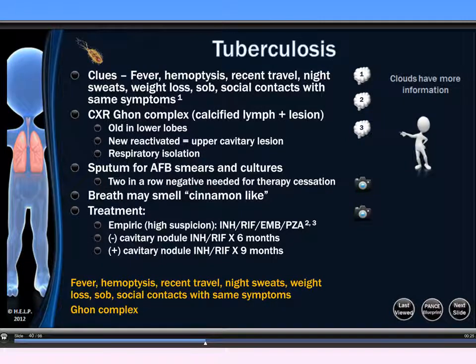We are now in the tuberculosis section of the Help PANCE-PANRE review. We are on one page where we can see all of our information without having to go to different pages or sites. In white are all the main points we'd like you to know about tuberculosis. In yellow are what we call PANCE points — things that we would whisper in your ear before the test.